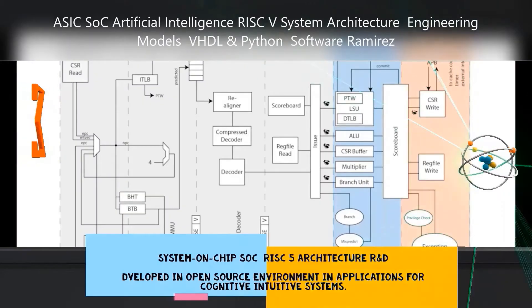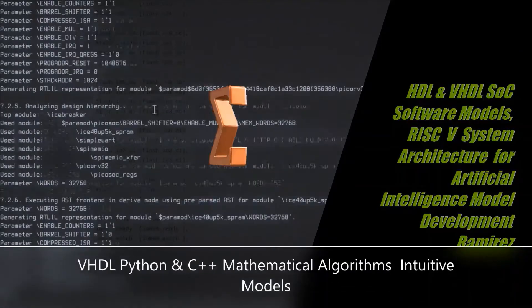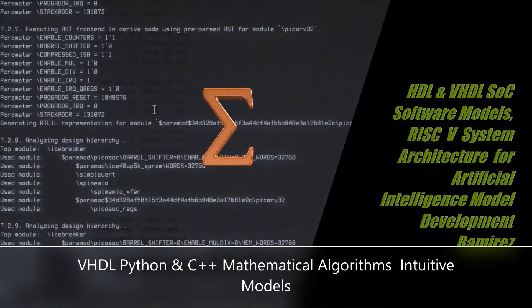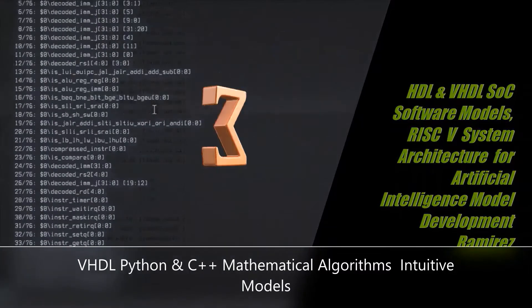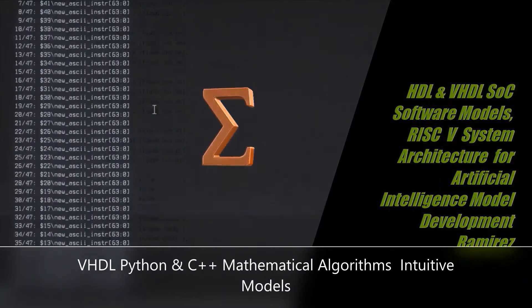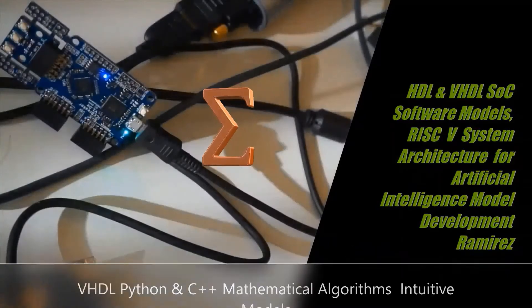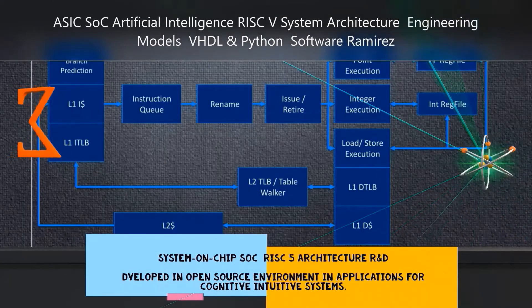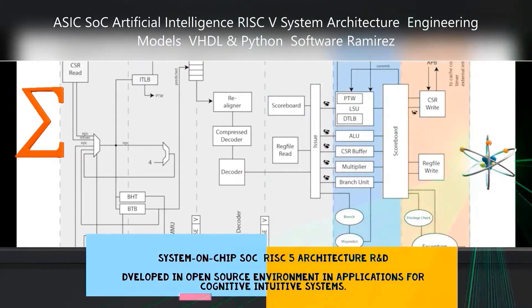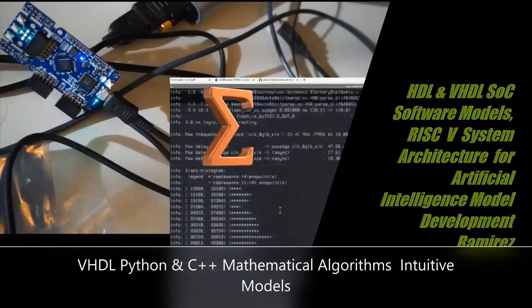If the operation is a load or store, the arithmetic logic unit result is used as an address to either store a value from the registers or load a value from memory into the registers. The result from the memory is written back into the register file.